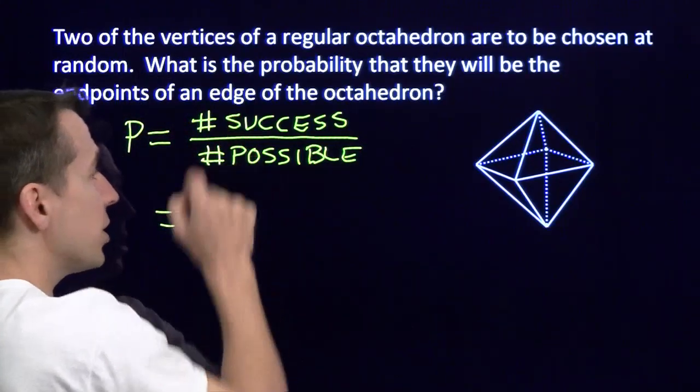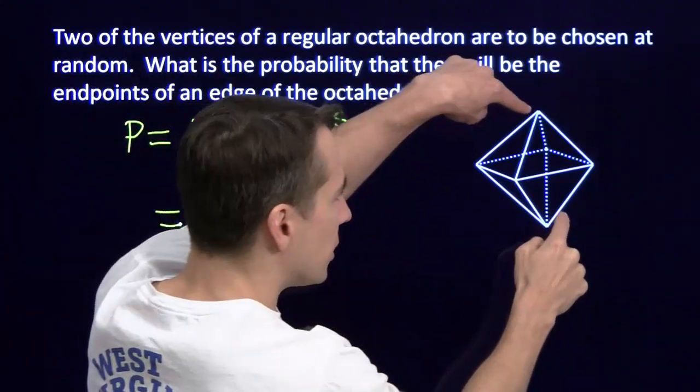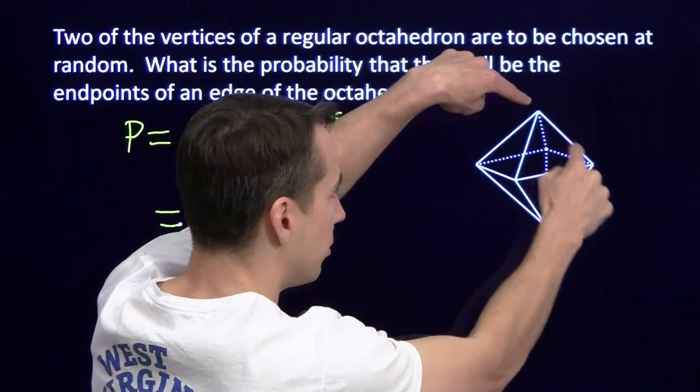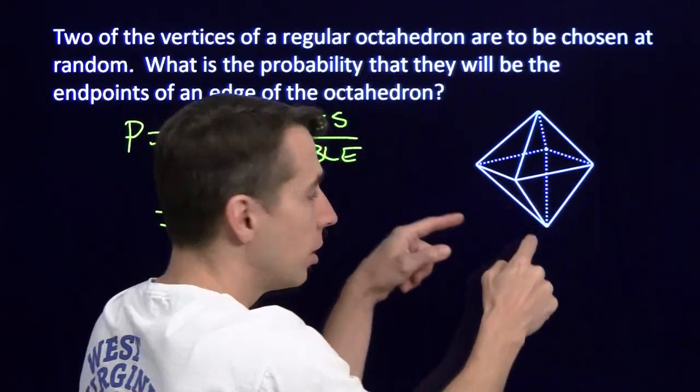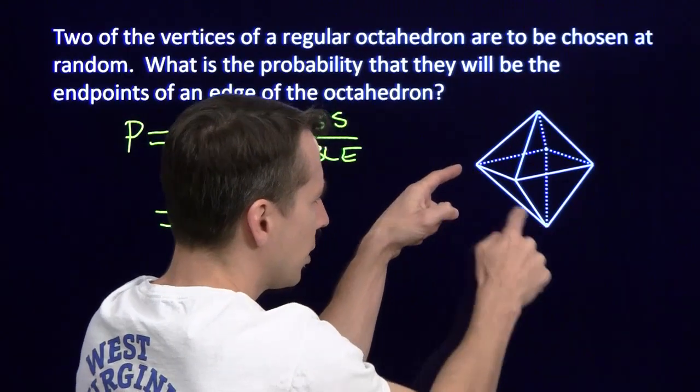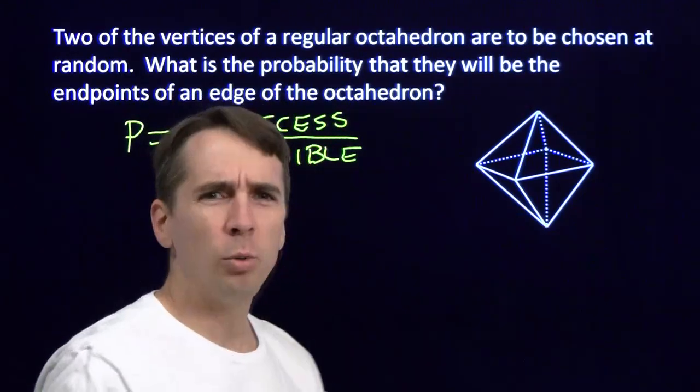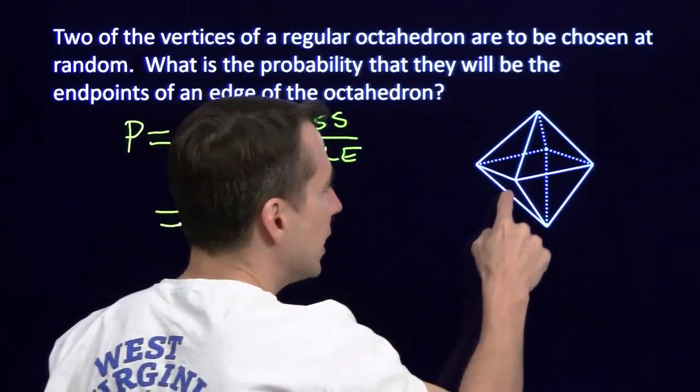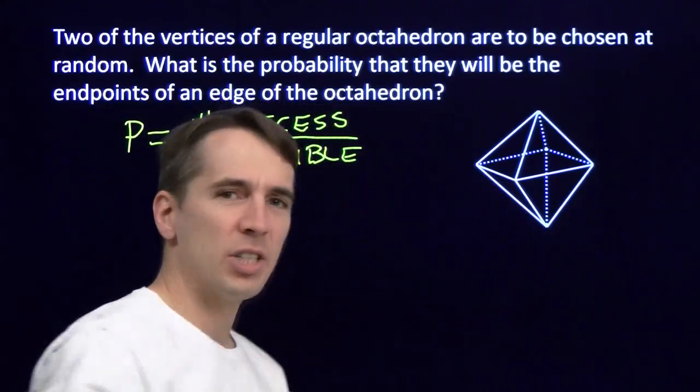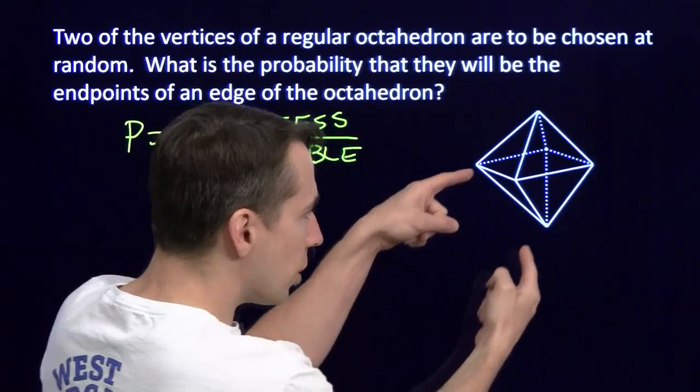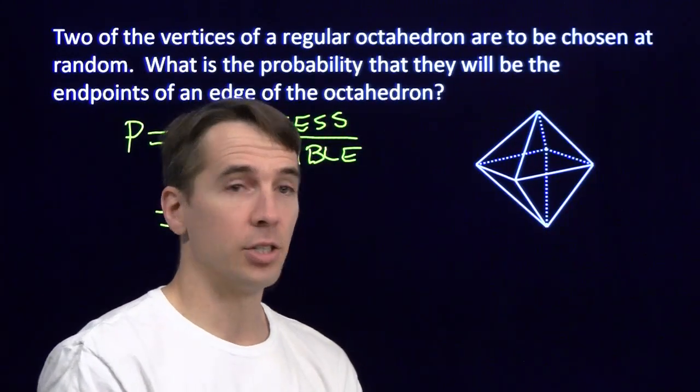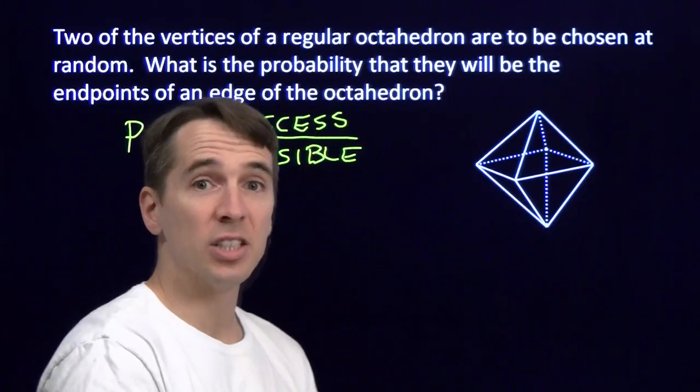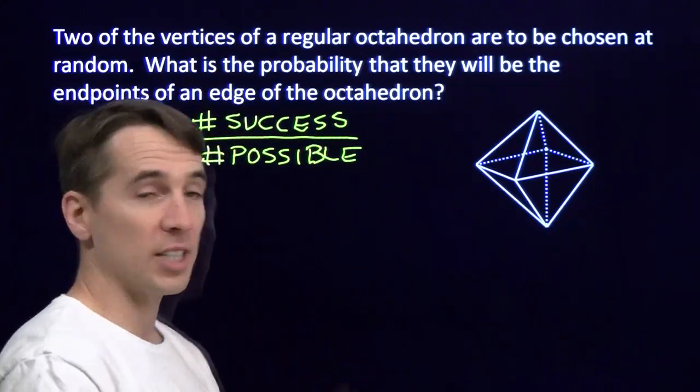Now we'll start off with the successes. If I choose this vertex and this vertex, that gives me this edge. If I choose this vertex and this vertex, that gives me this edge. This vertex and this vertex gives me this edge. All we're doing here is counting the edges. For each edge of the octahedron, there's exactly one way I can choose a pair of vertices that are the endpoints of that edge. So if I just count the edges, then I'm counting the number of successes.